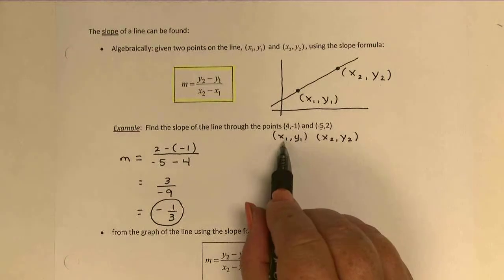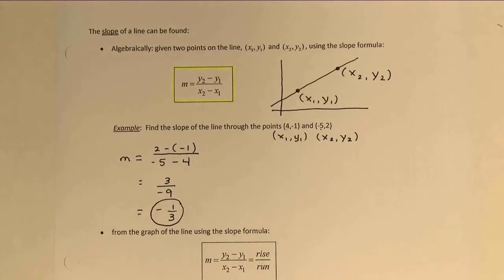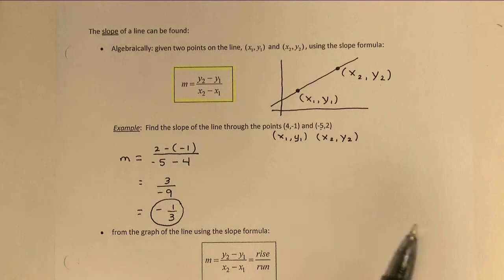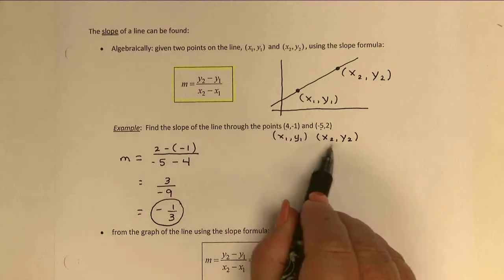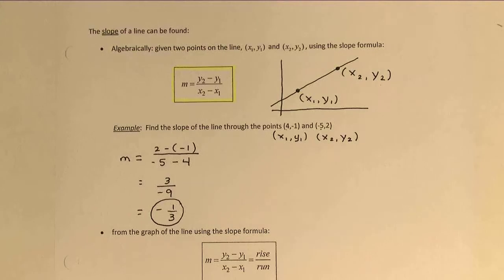Again, the choice of (x₁, y₁) versus (x₂, y₂) is arbitrary. It wouldn't have mattered if I had reversed those. What's important is the consistency. Make sure that the subscripts 1 are both in the same point, and the subscripts 2 are both in the same point.